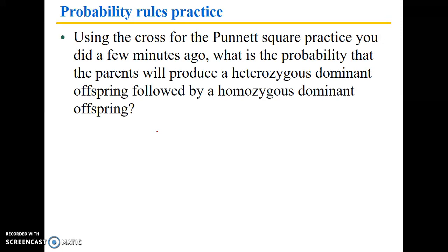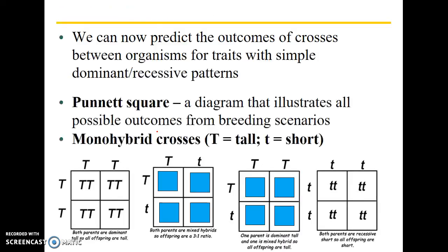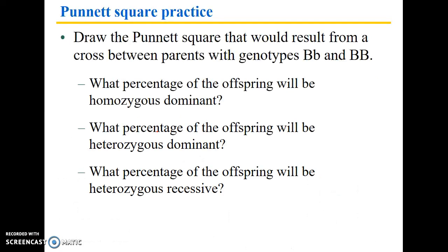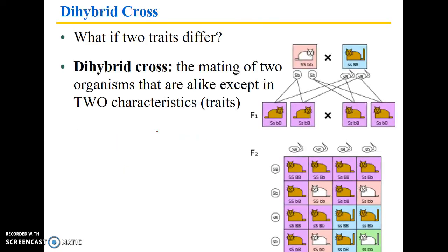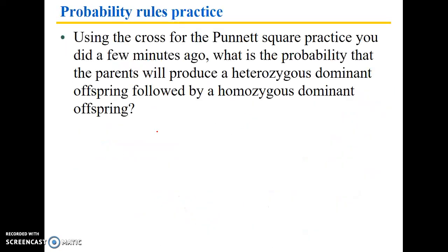Using the cross from the Punnett square practice we did a few minutes ago: what's the probability that the parents will produce a heterozygous dominant offspring followed by a homozygous dominant offspring? The cross here is big B, little b crossed with big B, big B.